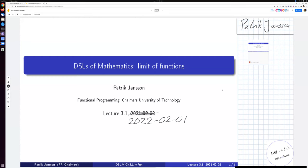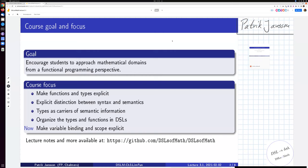So limit of functions. This slide is basically to remember the overview that the course goal is to approach mathematical domains from a functional programming perspective, to learn some functional programming for mathematicians and some mathematics for functional programmers. The focus is on making functions and types explicit to distinguish between syntax and semantics.